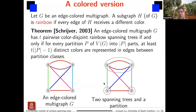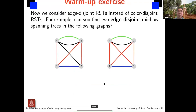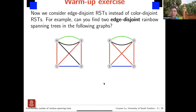We'll come back to this. But now the problem we consider is slightly different — not color-disjoint, but edge-disjoint rainbow spanning trees. In edge-disjoint rainbow spanning trees, different spanning trees can share edges of the same color. This makes the problem more complicated — we don't have sufficient and necessary conditions to classify this, but we can still answer similar questions.